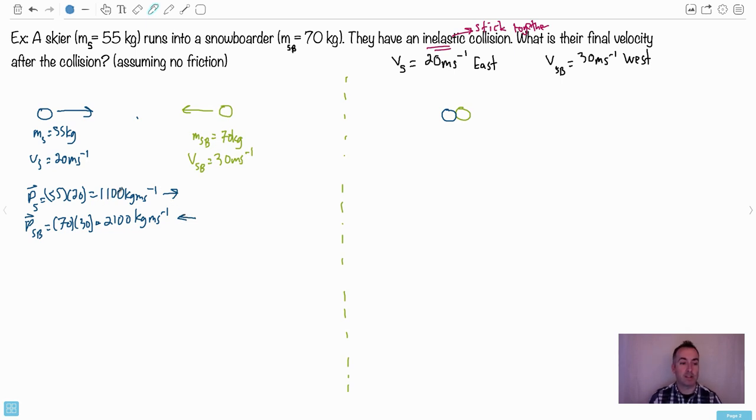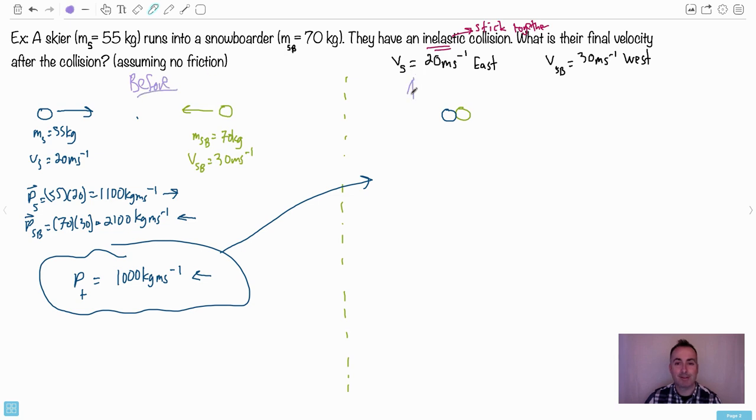Now it helps to figure out what's the total momentum. Total momentum, p total, is just going to be the momentum of the snowboarder plus the momentum of the skier. In this case I have to do 2100 and 1100, and they're opposite directions. So I know the one that's going to win is the snowboarder - 2100 minus 1100. That's going to give me 1000 to the left. This is the only thing that's allowed to cross that line. That line is going to define before the collision and after the collision. So the only thing that can cross this line, the only thing that's conserved, is this total momentum.